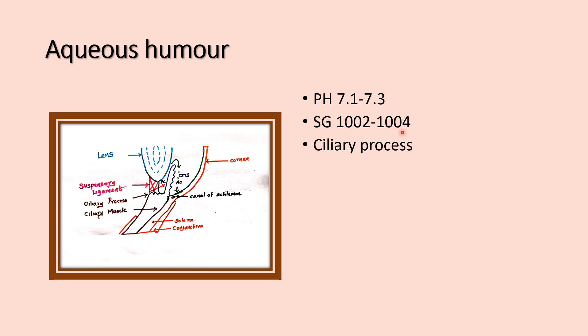It is formed from the ciliary process. This is the ciliary process. This is the lens. This is the posterior chamber. The iris is adjacent to the posterior chamber.